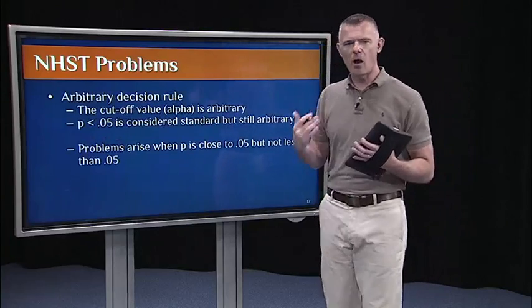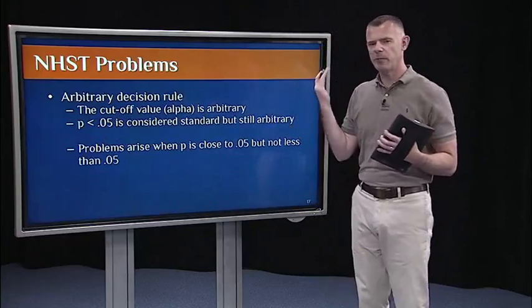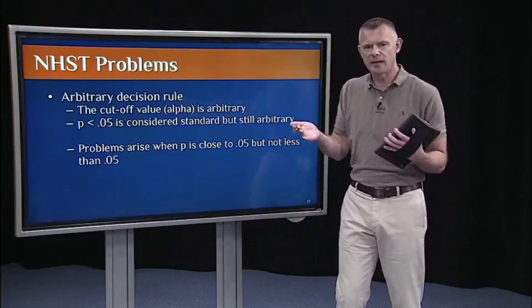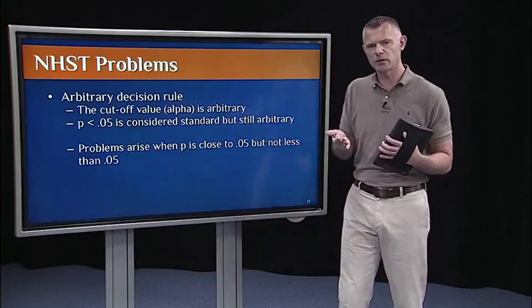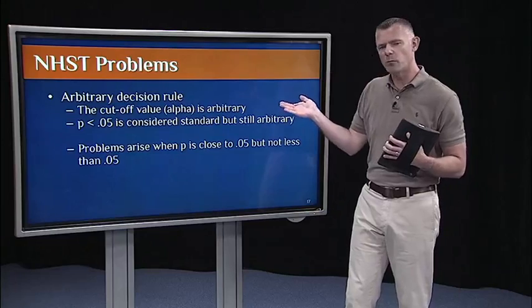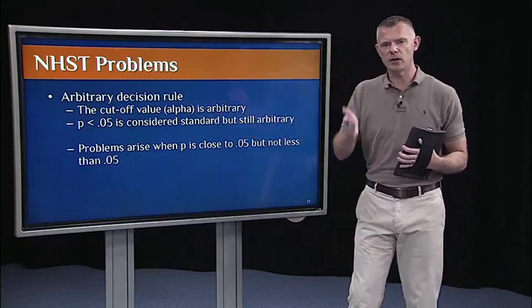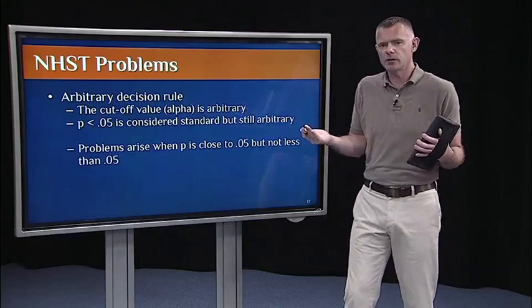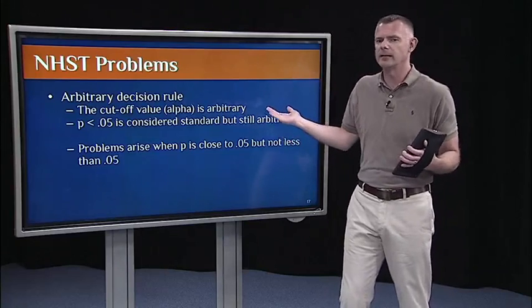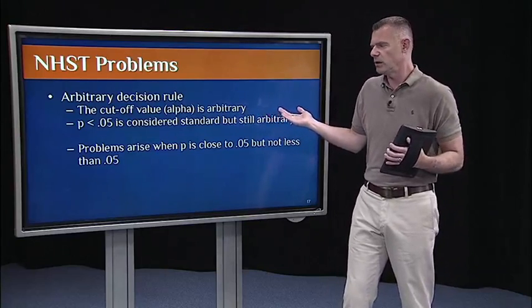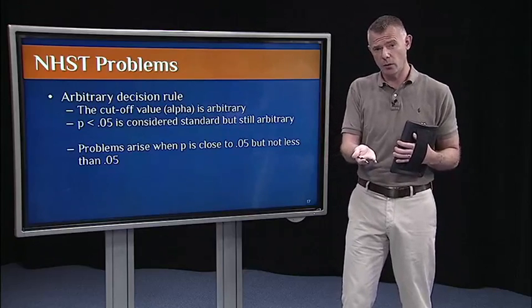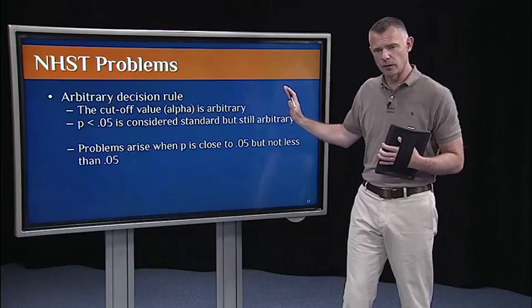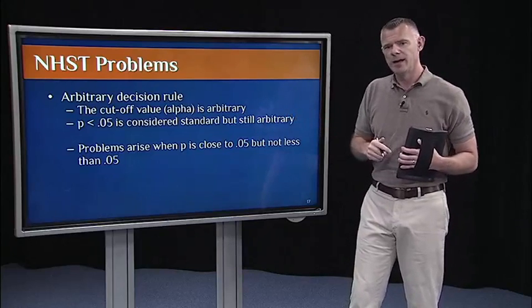The second problem is this arbitrary decision rule. Right? We just have to pick some cutoff value and say, once I get to that value, I'm going to reject the null hypothesis. Now, it's become standard, particularly in the social sciences, particularly in psychology, that an alpha value of 0.05 or P less than 0.05 indicates that you can reject the null hypothesis and claim that you have a statistically significant effect. But that's completely arbitrary. That's just somehow we just landed on P less than 0.05 as a field. We could change that to 0.01 if we wanted to be more conservative. We could change it to 0.1 if we wanted to be more liberal. The point is that it's completely arbitrary. So that's what I mean by arbitrary decision rule.